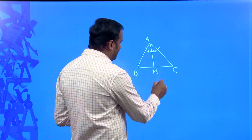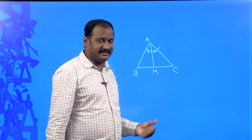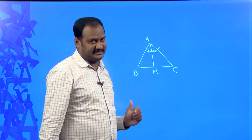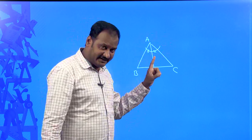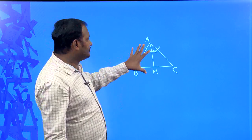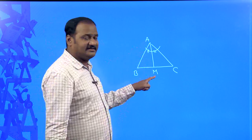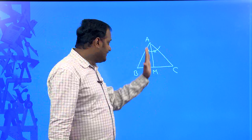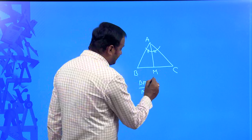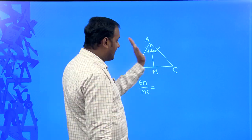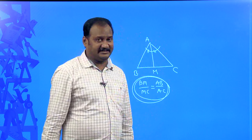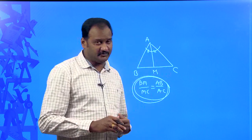Suppose this point is M. If AM bisects angle BAC, then that bisector divides the base into the ratio of the other two sides. According to the vertical angle bisector theorem, AM is the bisector of vertical angle BAC, so AM divides the base such that BM by MC is equal to AB by AC. This is the vertical angle bisector theorem, and we are going to use it to prove our statement.